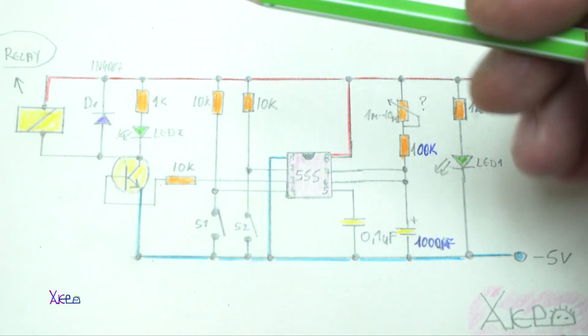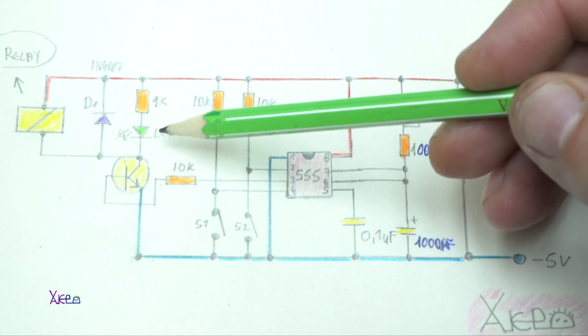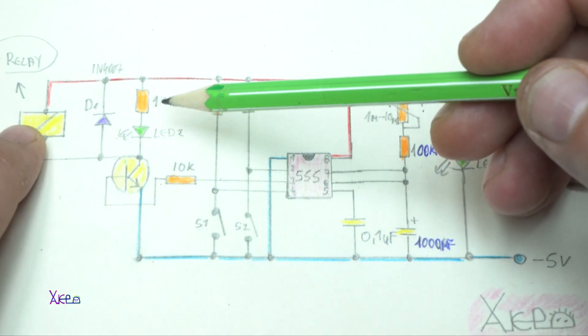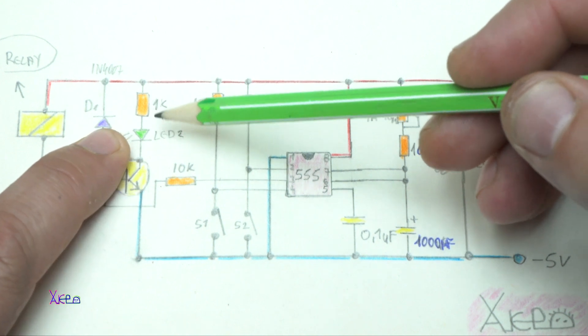Oh, not to forget that for the second LED when it indicates the relay is turned on, I will use a self-blinking LED.